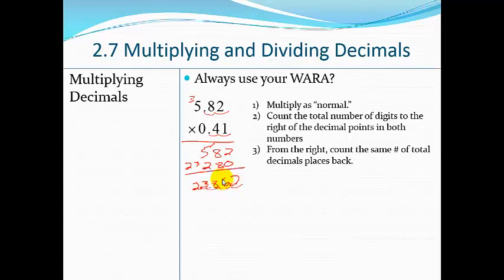And you could have also known where your decimal needs to go just by thinking about what your reasonable answer. If I didn't have my decimal here, that would be $23,000. If I had my decimal here, it's $2,300. $238. $23. No, 2.3. That's the only place that's close to my estimation.